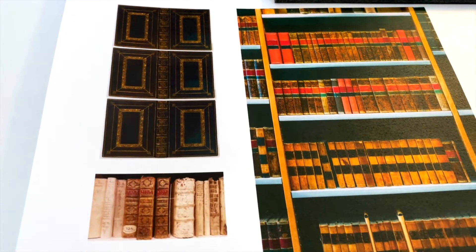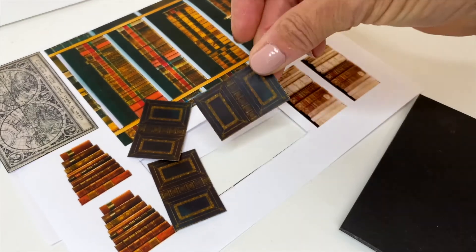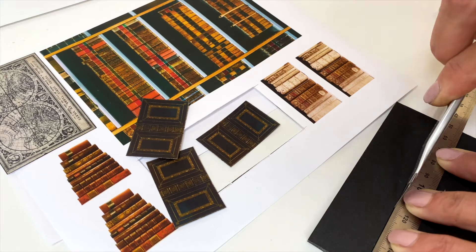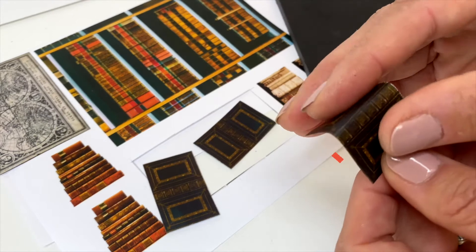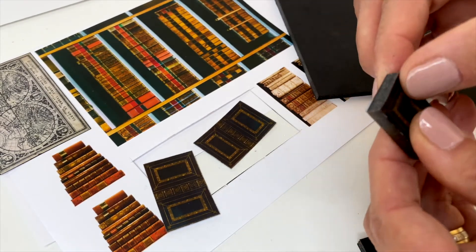Then I printed out some book covers and book spines. I cut them out. I prepared fitting book bodies from foam board. And glued the covers on. This is also very easy and quickly done.